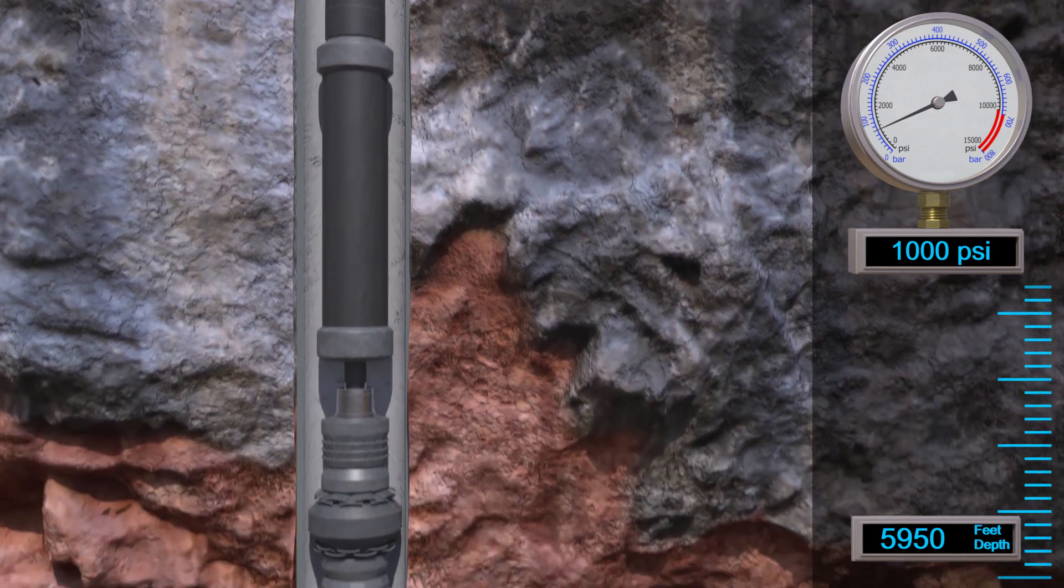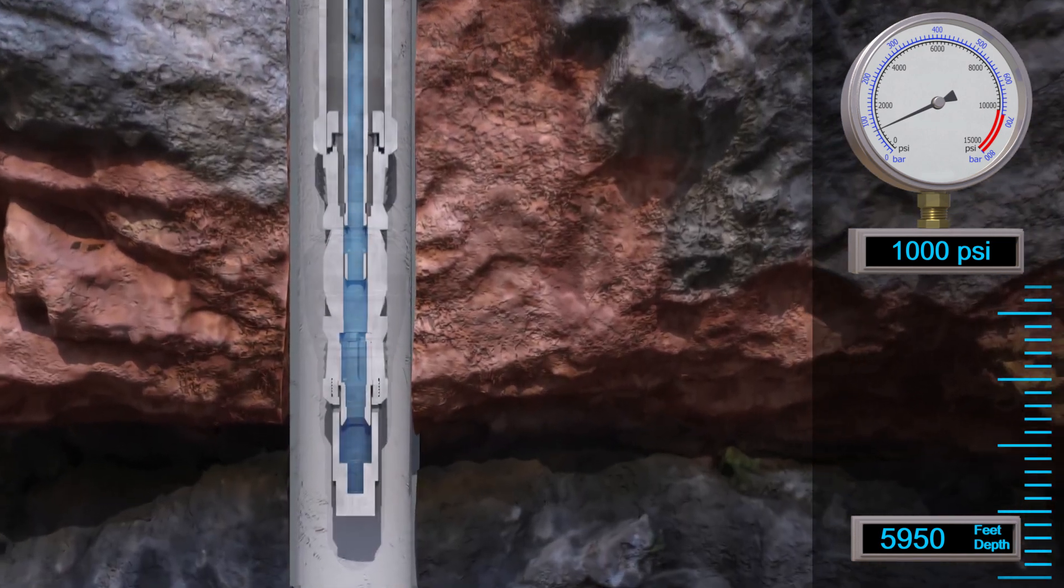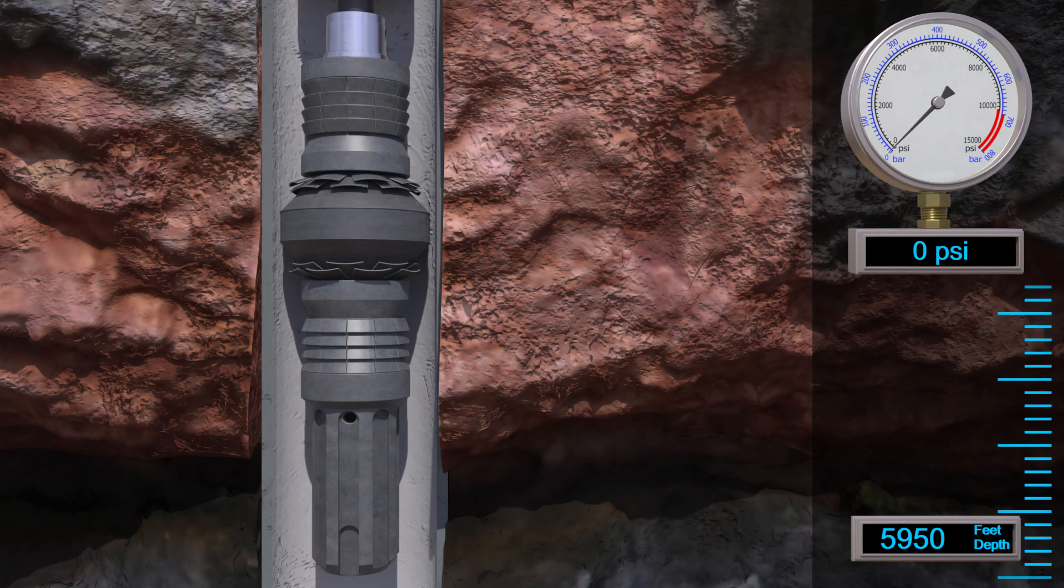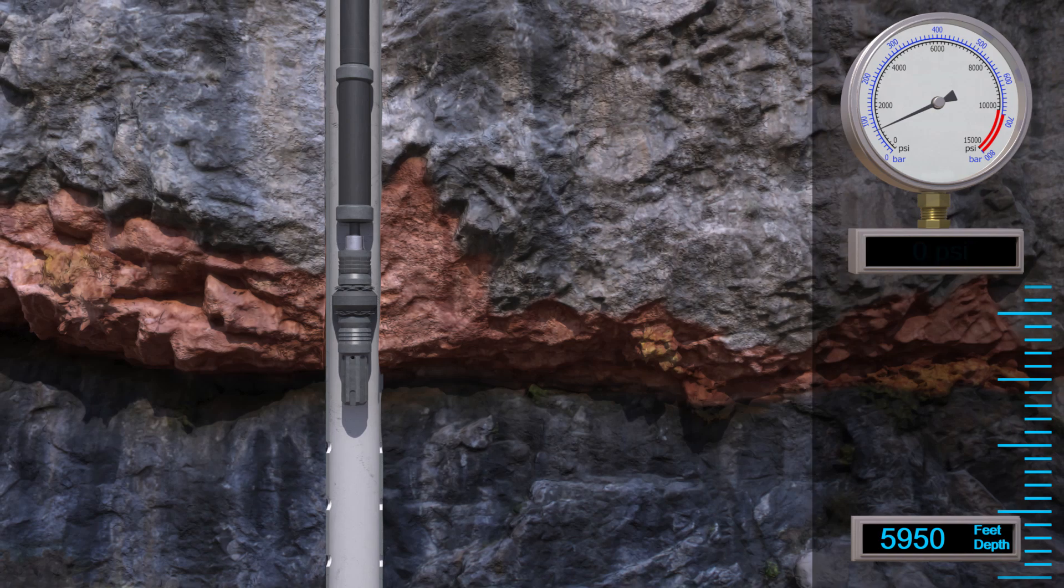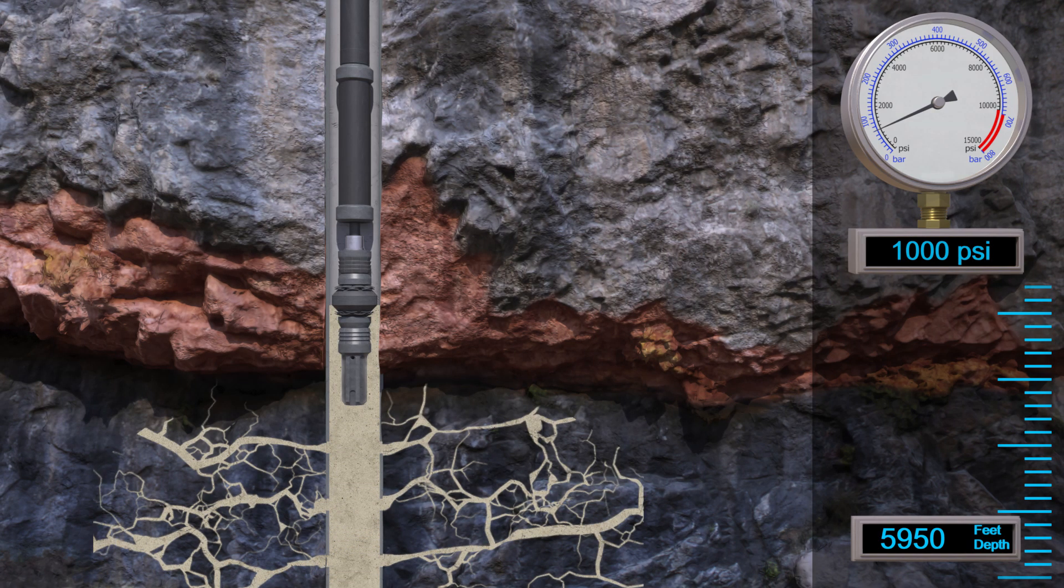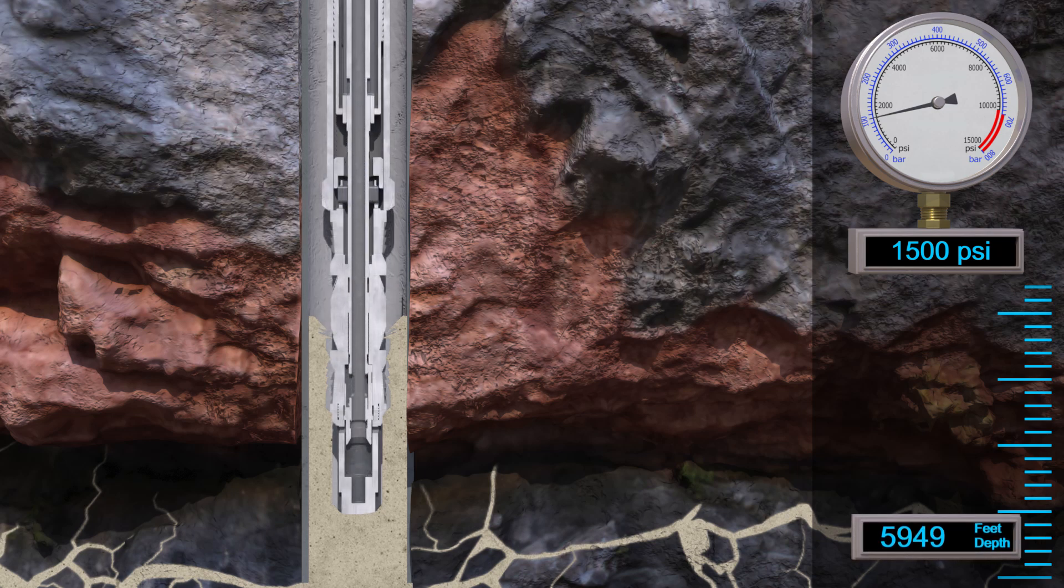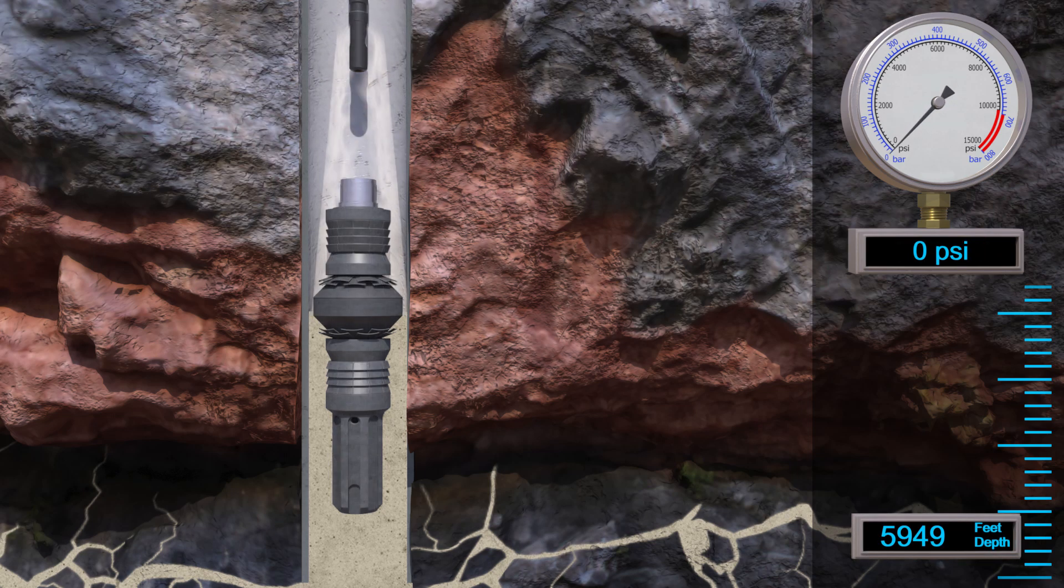At the same time, the release collet collapses and lets the setting sleeve slide upwards, exposing more of the stinger. Once these two motions are complete, the stinger is automatically driven to the inside of the retainer. Now let's start pumping cement through the retainer and into the oil zone. Once the predetermined amount of cement is squeezed below the retainer, we'll unsting from the retainer, which closes the sliding valve, and then we'll place cement above retainer.